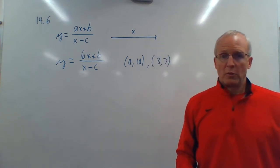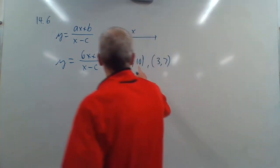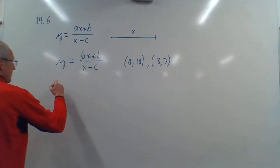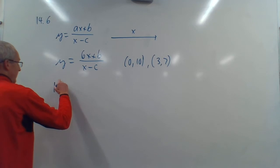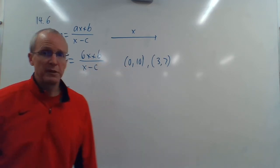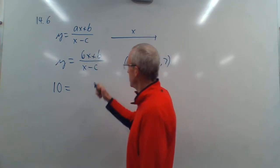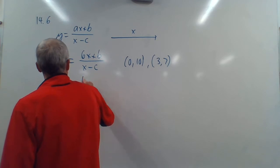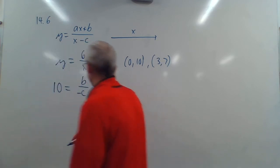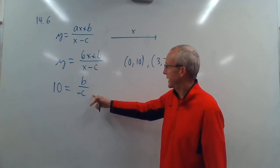So then we get those two equations, two unknowns, we solve for B and C. In other words, you set Y equal 10. So one of our equations is 10 is equal to X is 0. 0 is really nice. That makes our life easier, too, because we plug in X equals 0. That's 0, and that's 0. So we get B over negative C, because X is 0, X is 0, so B over negative C.